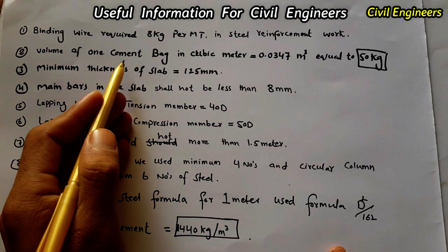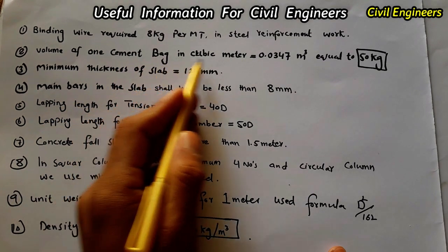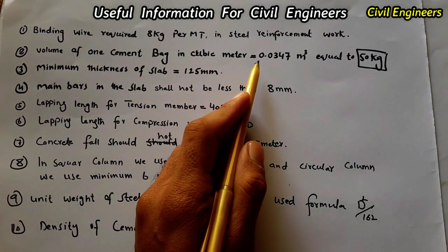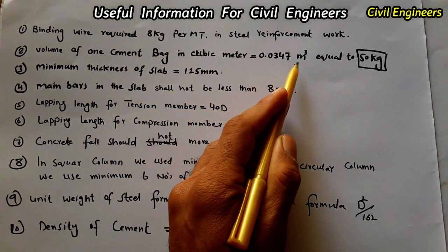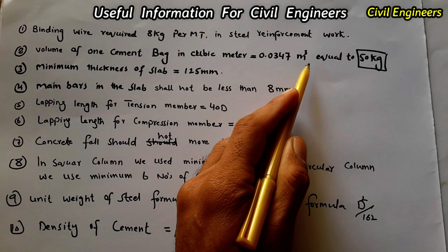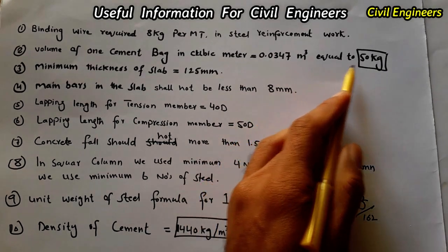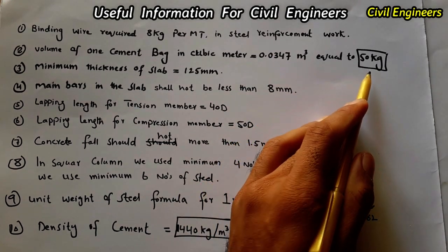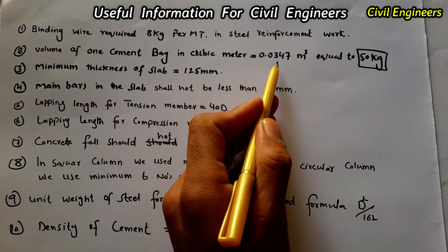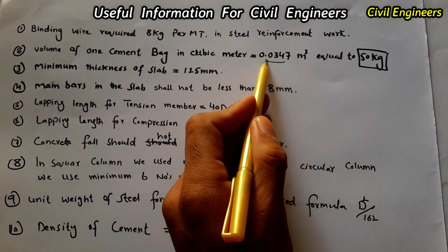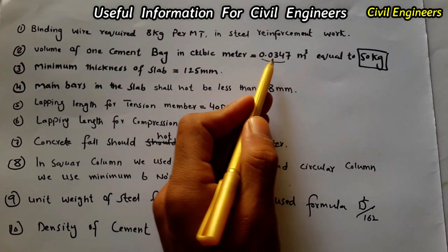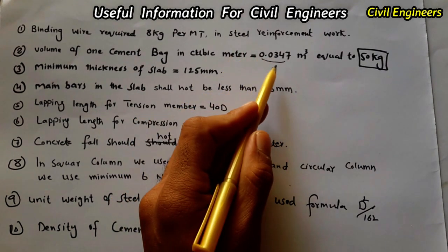The second point: the volume of one cement bag in cubic meters is 0.0347 m³, which is equal to 50 kg. This is the volume of one cement bag in cubic meters.